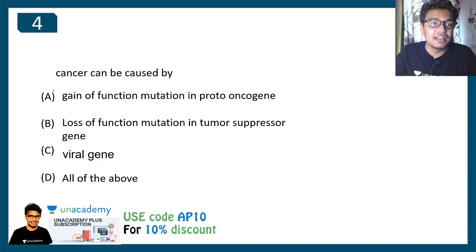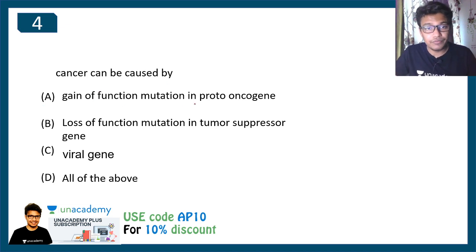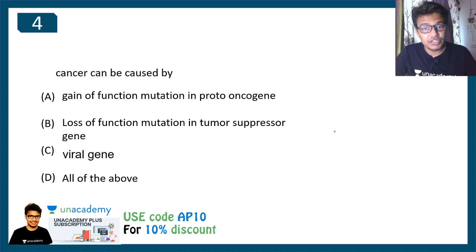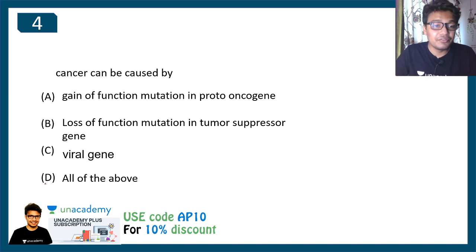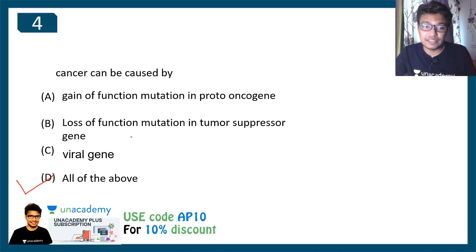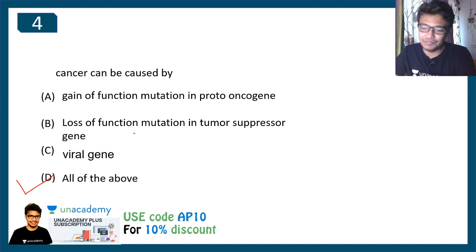Question four: cancer can be caused by gain-of-function mutation in proto-oncogenes, loss-of-function mutation in tumor suppressor genes, viral genes, or all of the above. Pause this video and try to answer. The answer is D — all of the above — because viral genes can also work like oncogenes. A dedicated video on this is available via the i button.